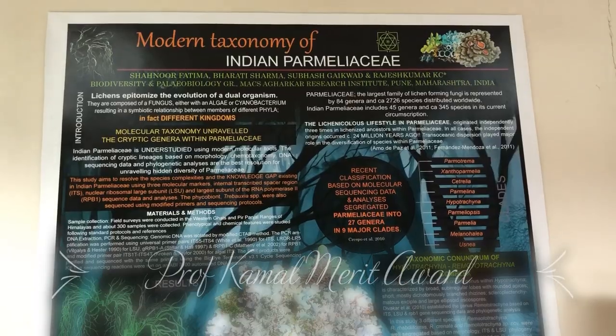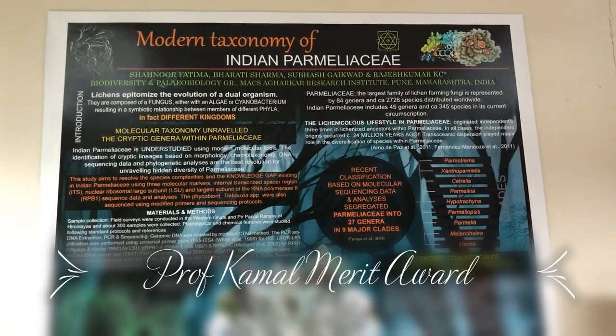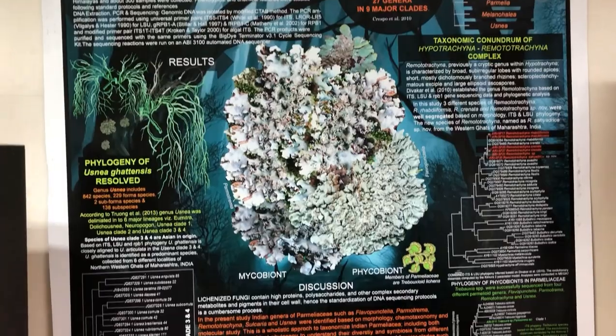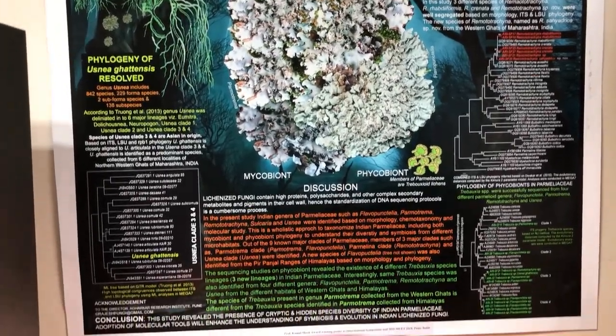So far, we have identified more than 100 lichen samples belonging to genera Punctelia, Flavopunctelia, Hypertrachyna, Rimeliella, Parmotrema, and Usnea. We are also publishing a few new species of Parmotrema and resolving the complexity of Punctelia and Flavopunctelia from India. As recognition, we have received a national award for best poster at the MSI MEET 2018.